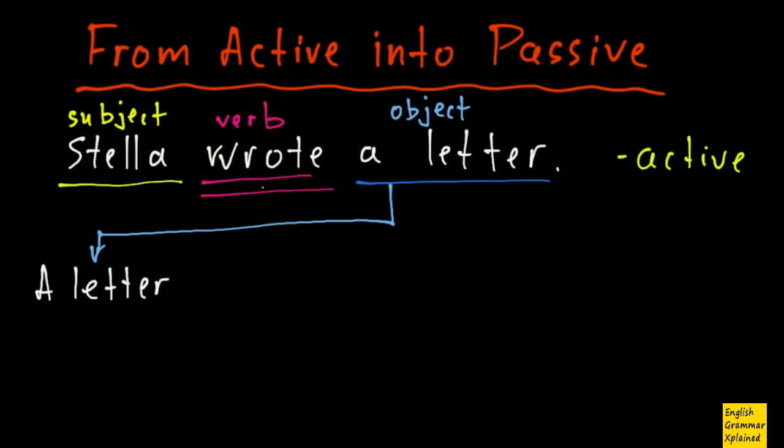Then I change my main verb into passive form. Here I have past simple, so in the passive I will also have past simple. So, a letter was written.